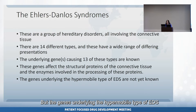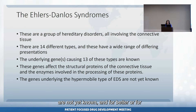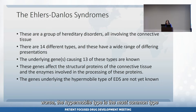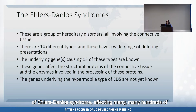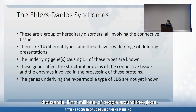But the genes underlying the hypermobile type of EDS are not yet known. And for better or for worse, the hypermobile type is the most common type of Ehlers-Danlos syndrome, affecting many hundreds of thousands if not millions of people around the globe.